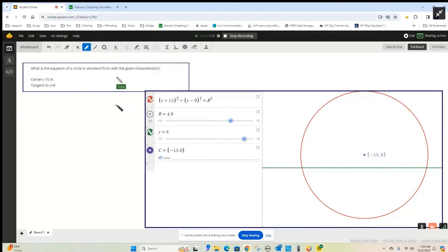Some textbooks call this standard form, some call it center-radius form, because it's easy to identify the center and the radius of the circle.